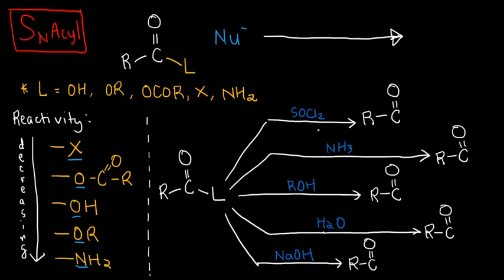First, we must clarify that this is going to be our working formula for all the functional groups that will be included. This has the format RC double bond O L, where L is the variable part. Depending on what L is, we get a different type of organic compound.